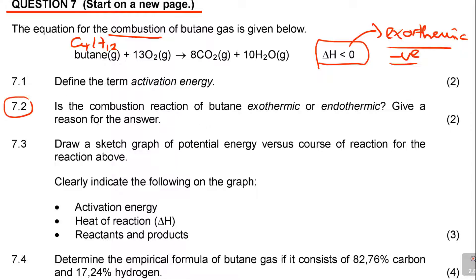7.2: Is the combustion reaction of butane exothermic or endothermic? Give a reason for the answer. I already did it. It is exothermic. Why? Then you can say because delta H is less than zero. That's the reason. You'll get your mark. Or you can say because it releases heat as delta H is less than zero or delta H is negative. But the key word there is delta H is less than zero.